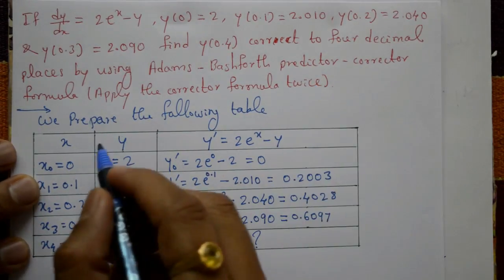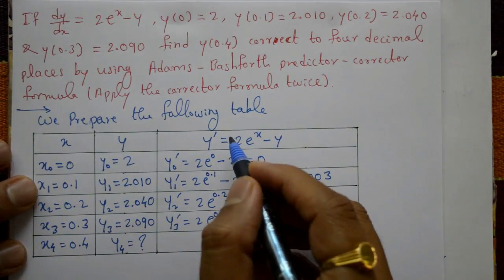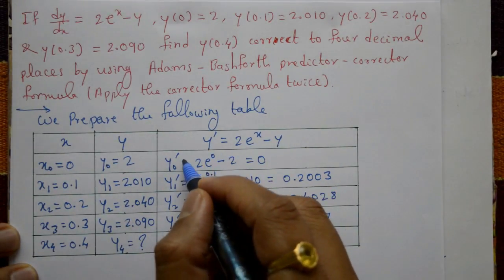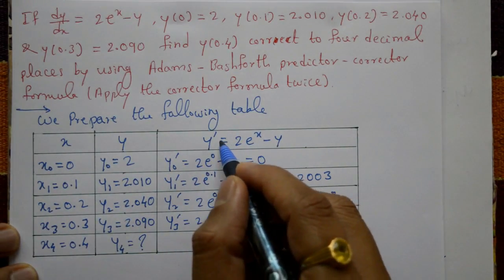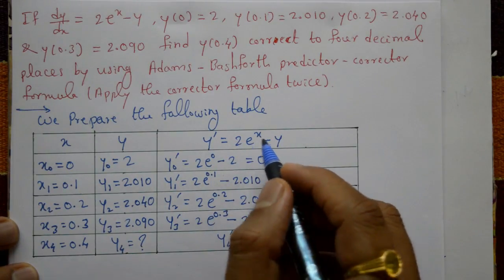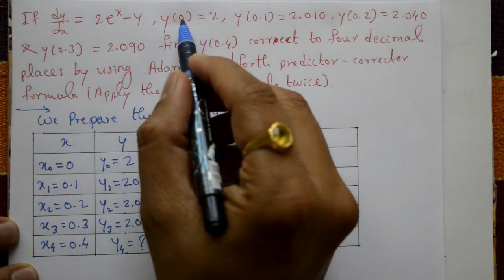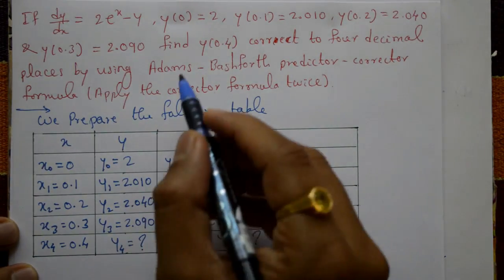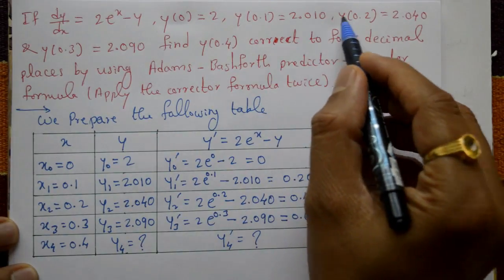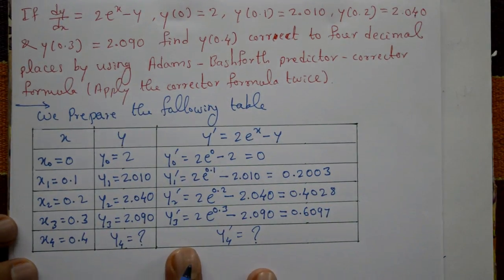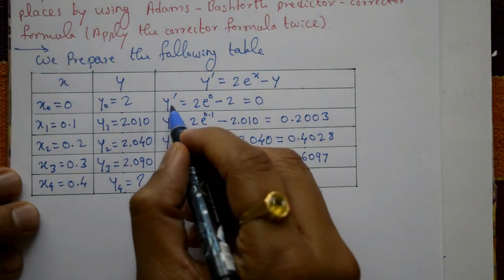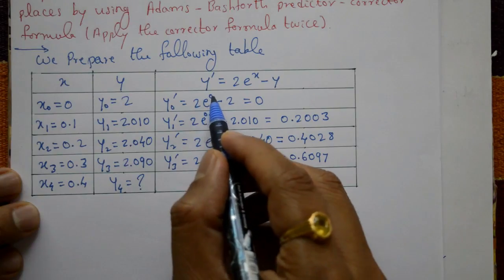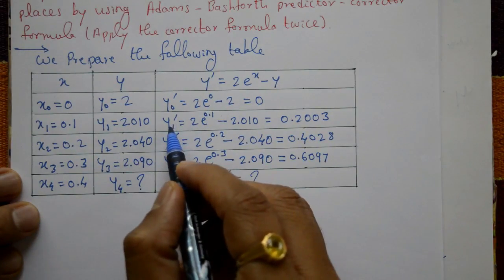First we prepare the table of x values, y values, and y-dash values, where y-dash means dy/dx is equal to 2 into e raised to x minus y. The x values are x0, x1, x2, x3, and x4, with corresponding y values y0, y1, y2, y3. First, find y0-dash using x0 and y0: 2 into e raised to 0 minus 2 is equal to 0.